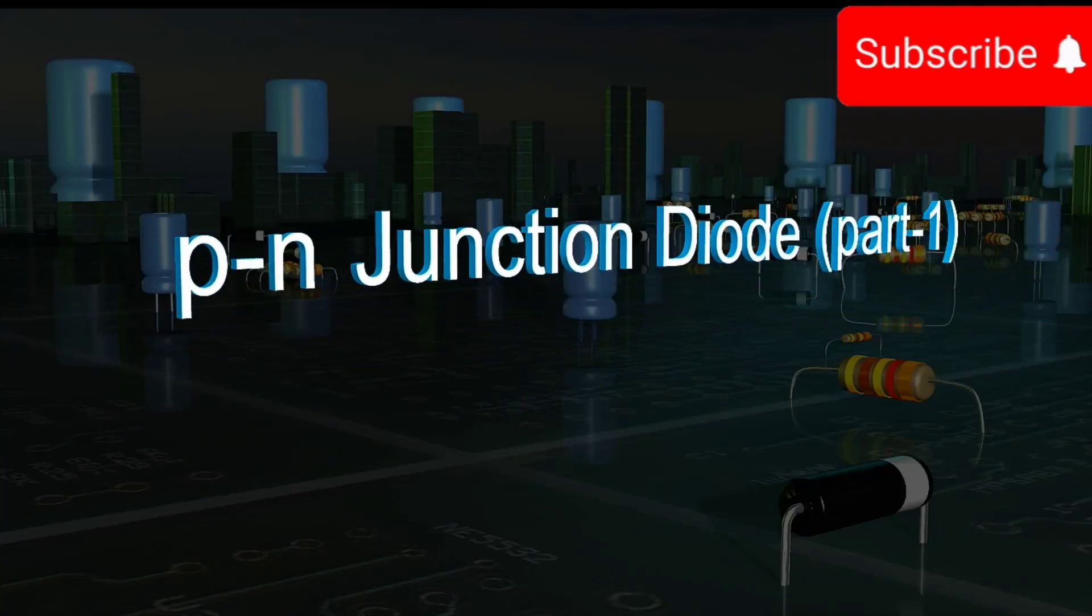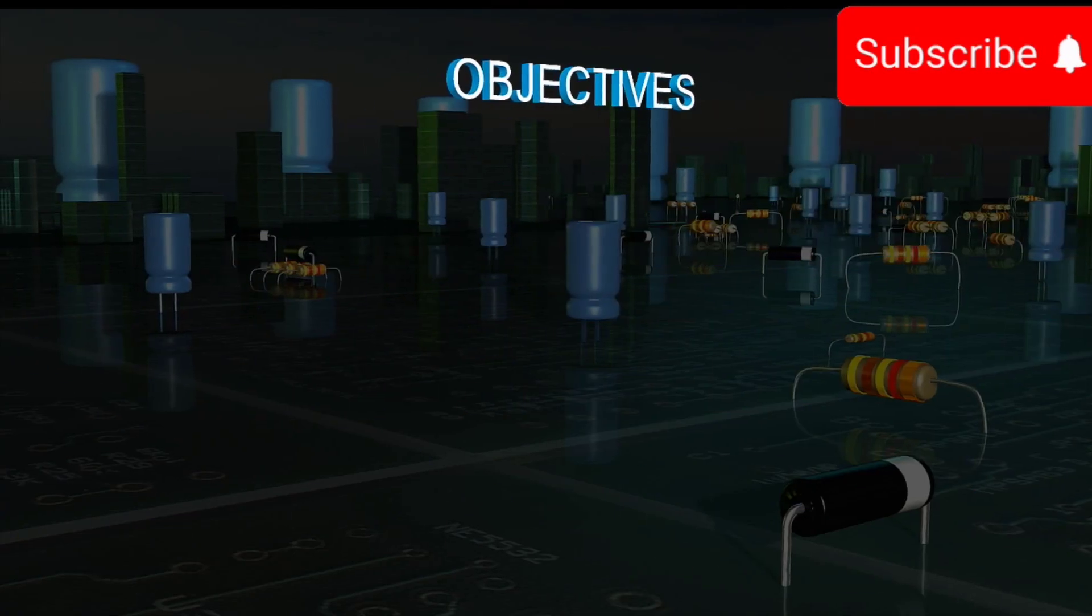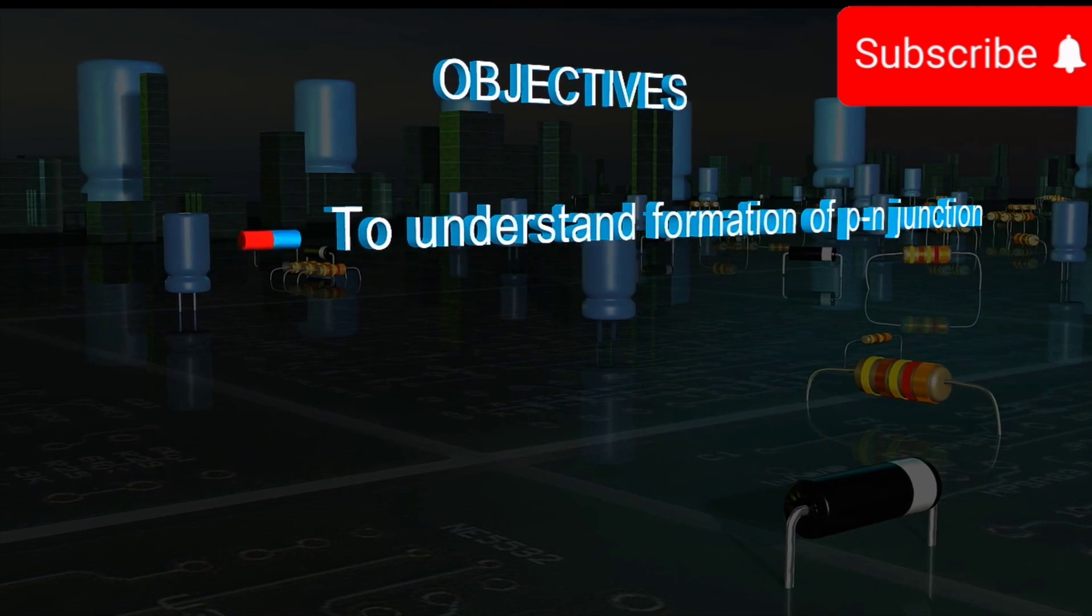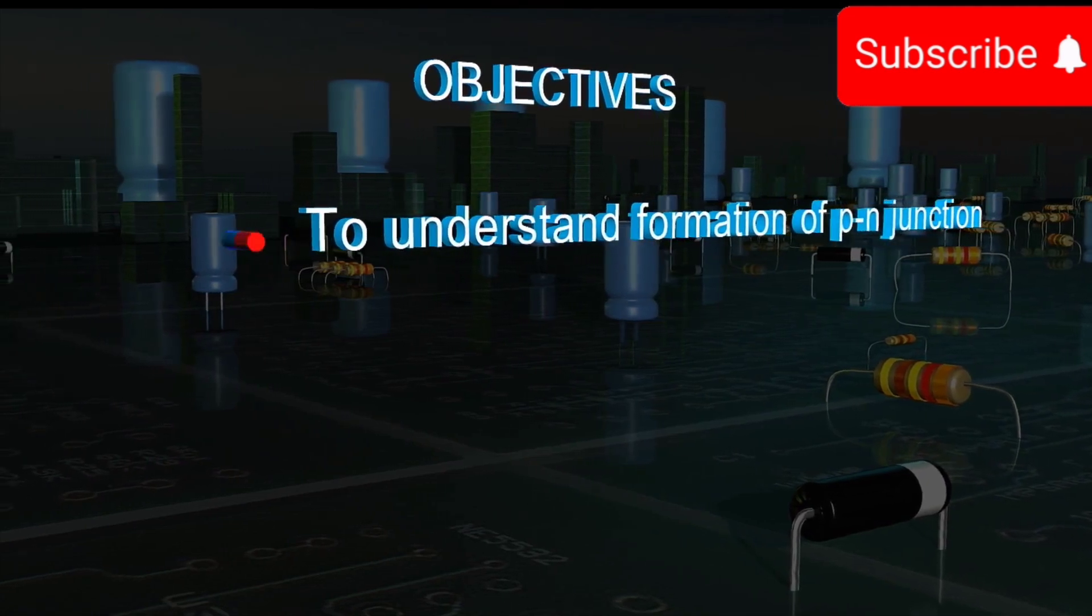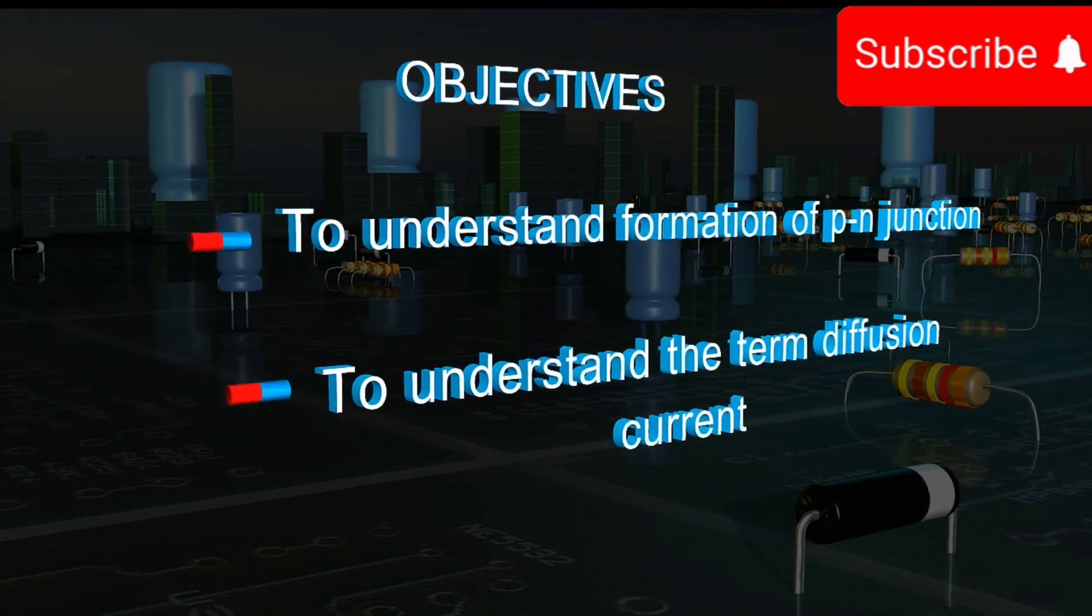PN Junction Diode Part 1. Objectives: To understand the formation of PN junction. To understand the term diffusion current.